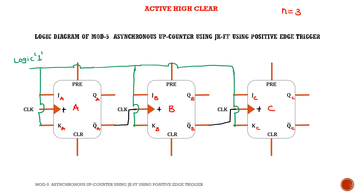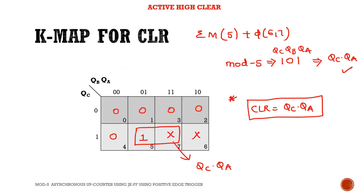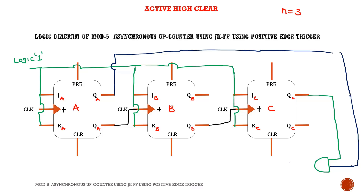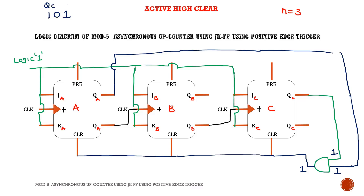For mod 5, clear = QC·QA, which is implemented by an AND gate with inputs QC and QA. The output of the AND gate is connected to the clear pins of all flip-flops. Whenever QC=1 and QA=1 (i.e., state 101 is detected), the AND gate output is 1, enabling the clear pin. When clear=1, the output resets to 0.